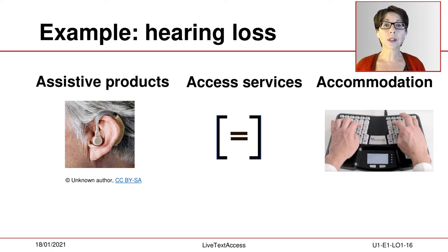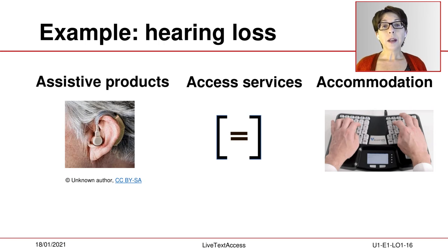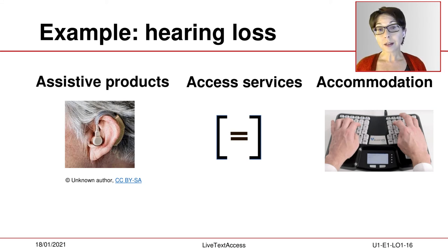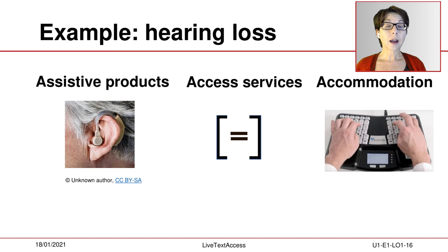For instance, hearing aids work outside the normal hearing range of 2 to 20 decibels and can be affected by noise. Lip reading is only possible if the image quality is good and only if one person is speaking at a time. Similarly, subtitles are useful, but only if they are correct and accurate.